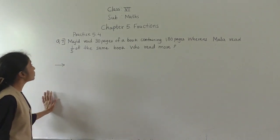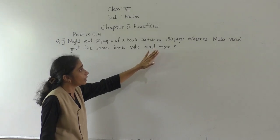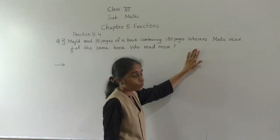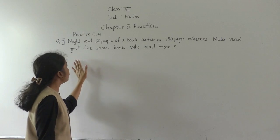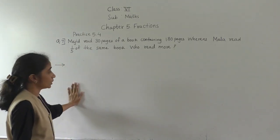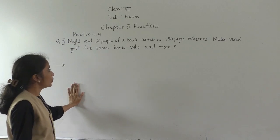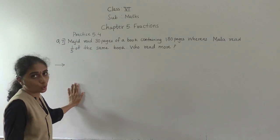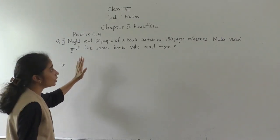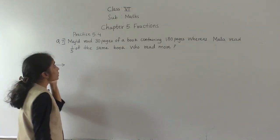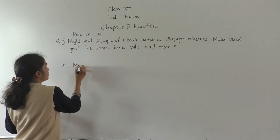Let's solve question number 7. Majid reads 30 pages of a book containing 180 pages. Whereas Mala read 1 fifth of the same book. Who read more?